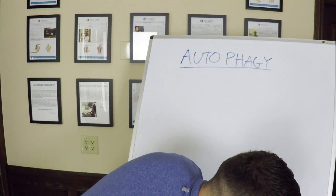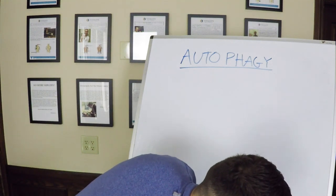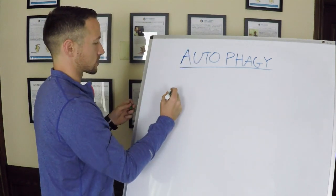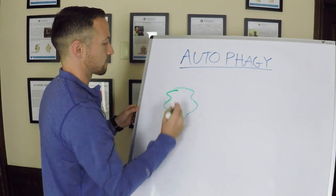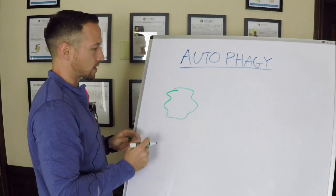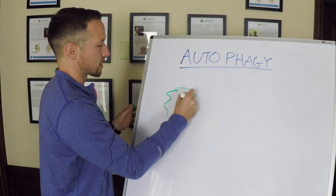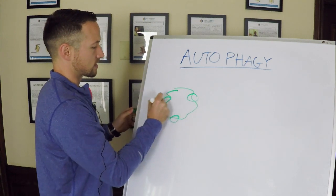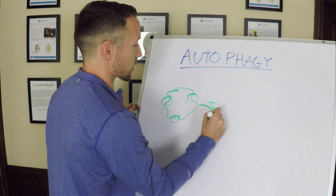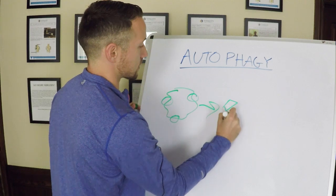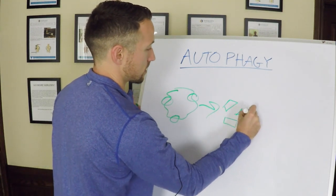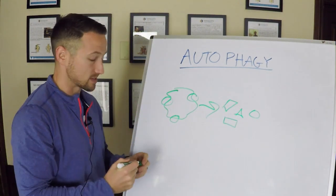But here's something else that happens. So when autophagy gets stimulated and when your body begins to break down some of these sick and damaged cells, what it will do is it will take this sick cell, let's say, and what it will do is it will say, okay, well out of this sick and damaged cell, this is healthy, this is healthy, this is healthy, and it will actually break it down into its subsequent parts.